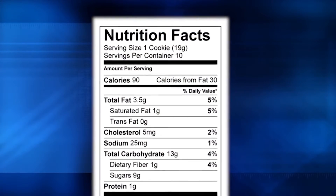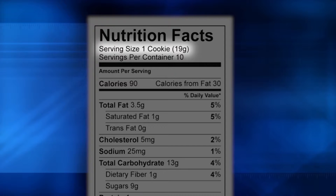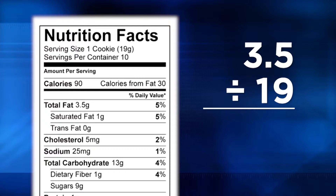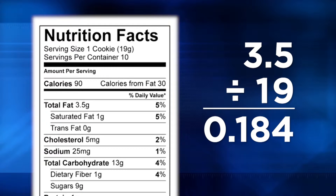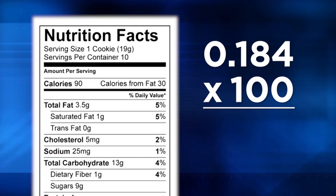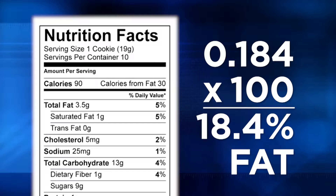You're already familiar with this general idea if you've ever calculated percentages using data from nutritional facts on a container of processed food. On this label of a package of cookies, for example, you can read that the food serving size is 19 grams. One serving contains 3.5 grams of fat. 3.5 grams of fat divided by 19 grams of food is 0.184. Multiply that number by 100 to show that this cookie has a percent composition by mass of 18.4 percent fat.